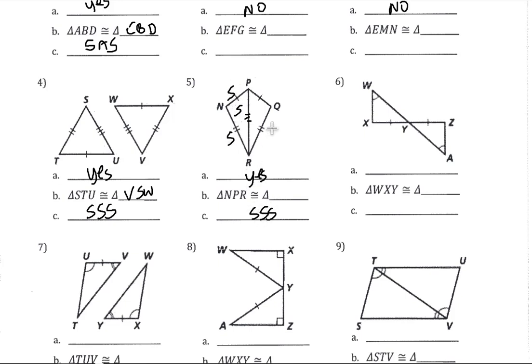In number 5, we have what we call a kite and reflexive in the middle. It gives us a side, and then the two sides are congruent, so that gives us side-side-side. It's important to use the correct letters: Q goes with N, P with P, and R with R.